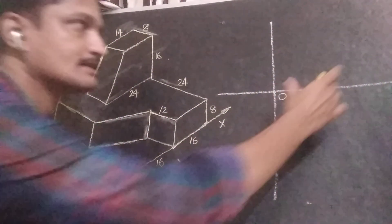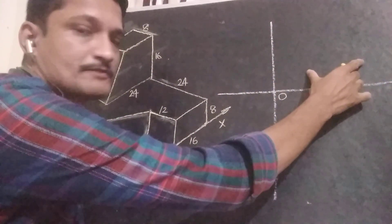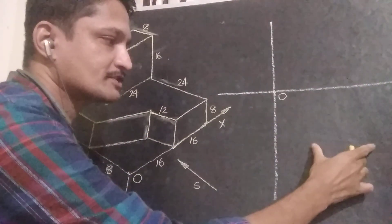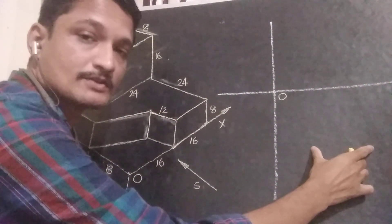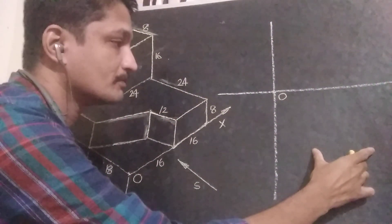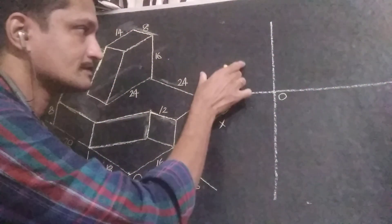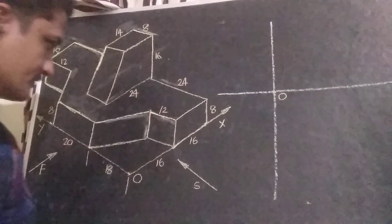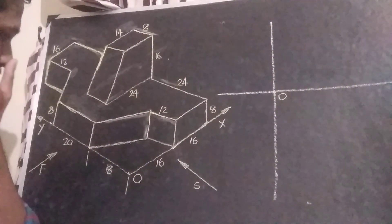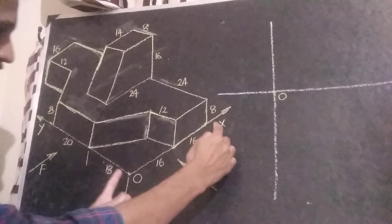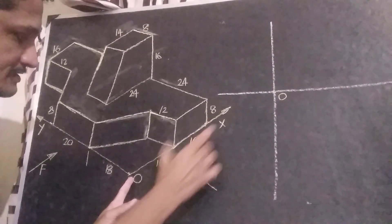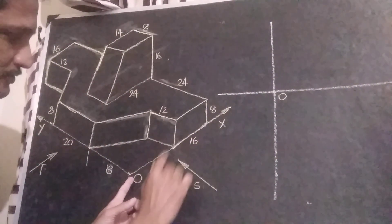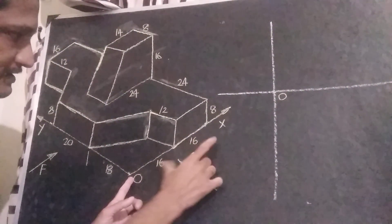This is the space for the front view, then this is the space for the top view, and this is the space for the right side view. This total distance is equal to 32, that is 16 plus 16.